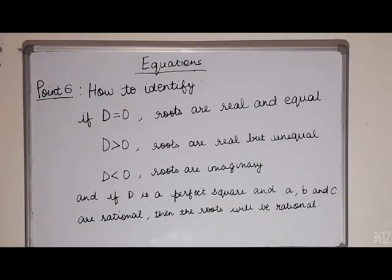Our sixth point is how to identify if the roots are real, equal, unequal and imaginary. If d equals 0 then roots are real and equal. If d is greater than 0 then roots are real but unequal. If d is less than 0 then roots are imaginary. And if d is a perfect square including d equals 0, then the roots are rational.